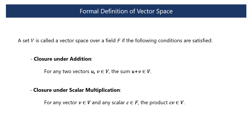Formally, we can define a vector space as the following. A set is called a vector space over a field F if the following conditions are satisfied. The first is closure under addition: for any two vectors U and V in a vector space V, the sum of U and V also belongs to the vector space V. That is, the result of adding vectors in a vector space always falls within that vector space.